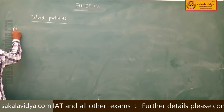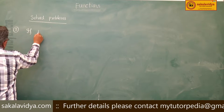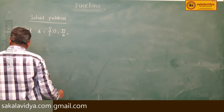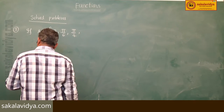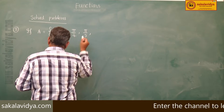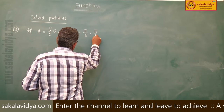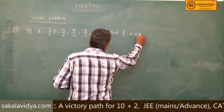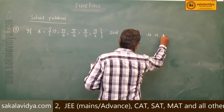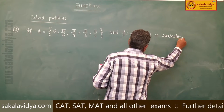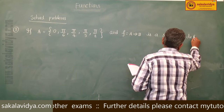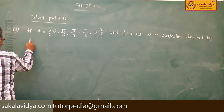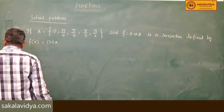Third problem. If A = {0, π/6, π/4, π/3, π/2}, and f: A → B is a surjection defined by f(x) = cos x, then find B.